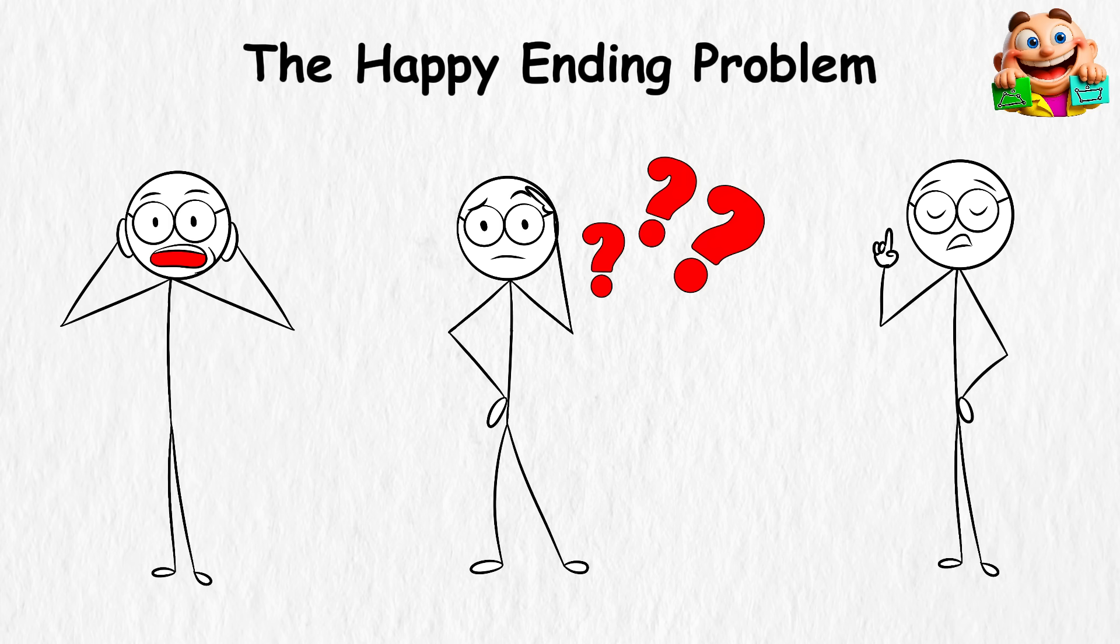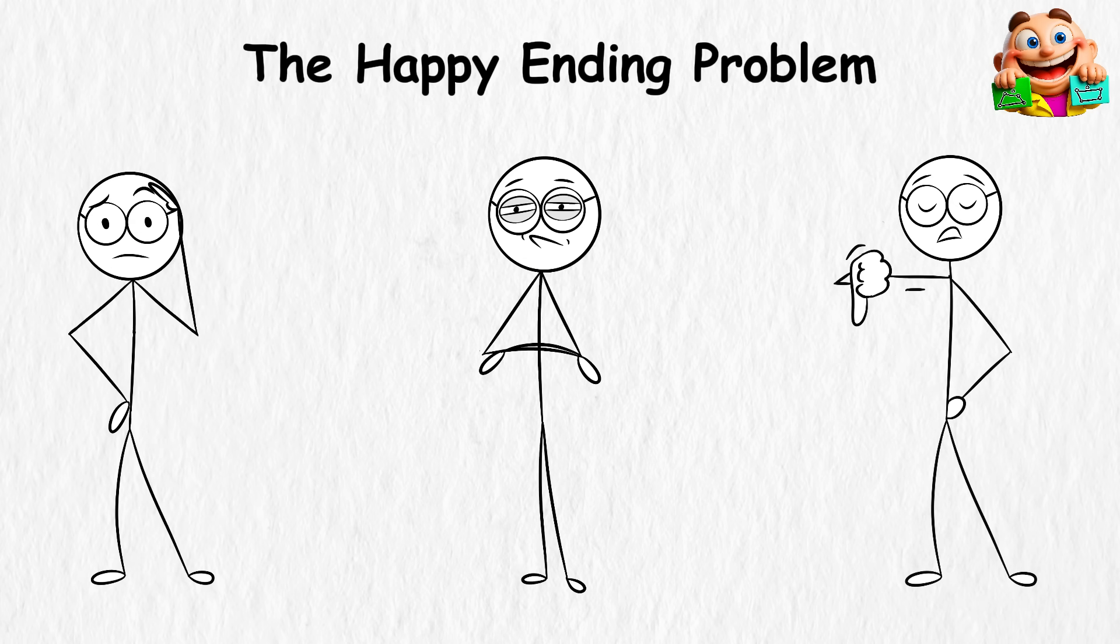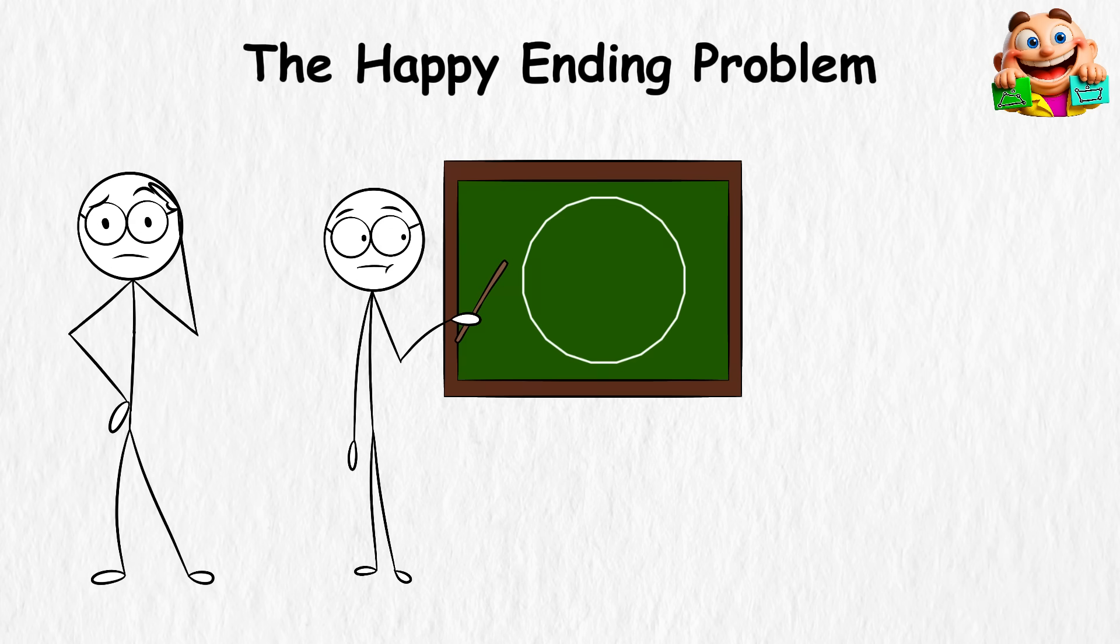And that's the real mystery. We know these guarantees exist, but no one has figured out the exact formula for large shapes. For example, how many points would you need to guarantee a convex 20-sided polygon? Mathematicians still don't know.